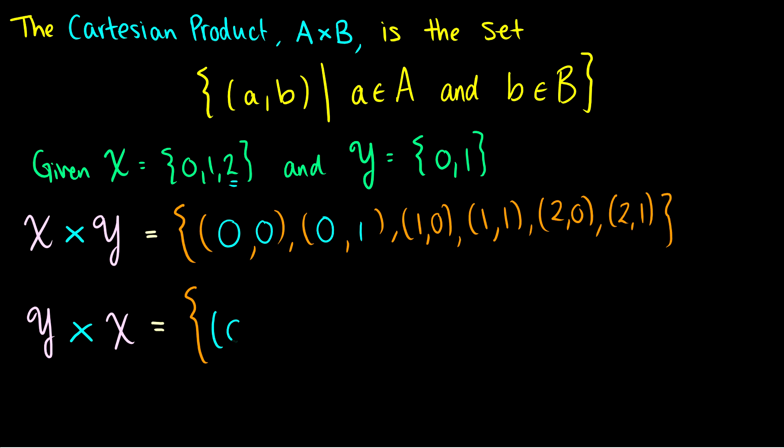So I'll still have (0,0), and then I will have (0,1) and (0,2). So this is when Y is equal to 0, then X is 0, 1, or 2. And then we'll do everything starting again when Y is 1. So we'll have (1,0), (1,1), and (1,2). Now we can see this is the exact opposite of X cross Y.